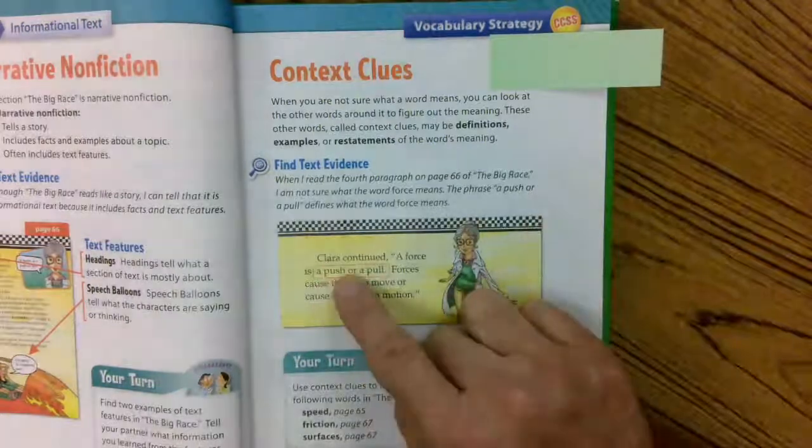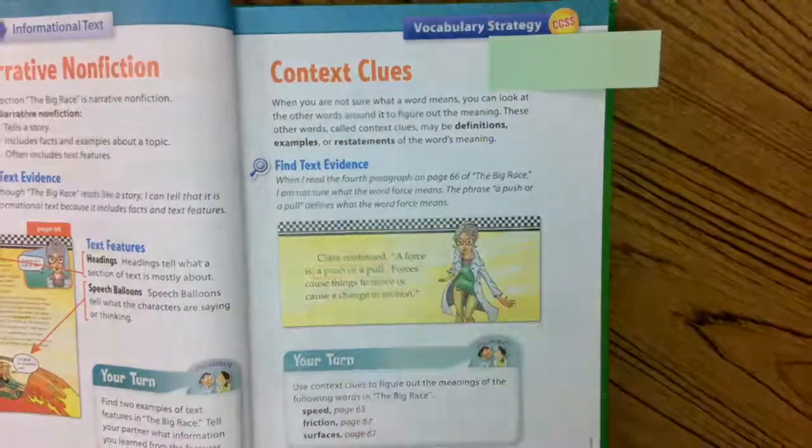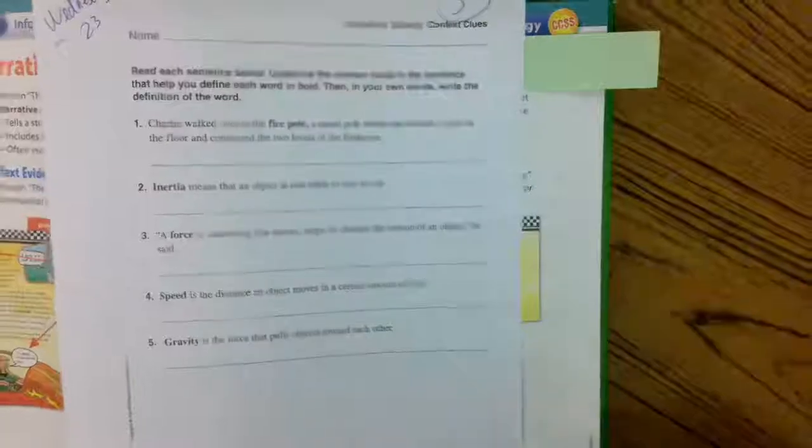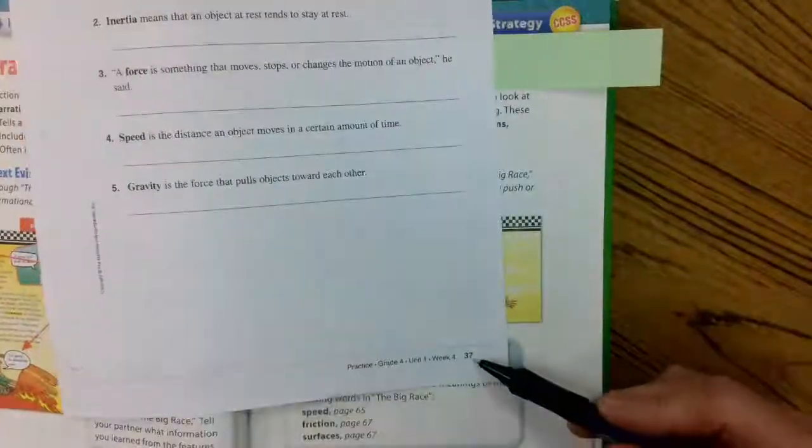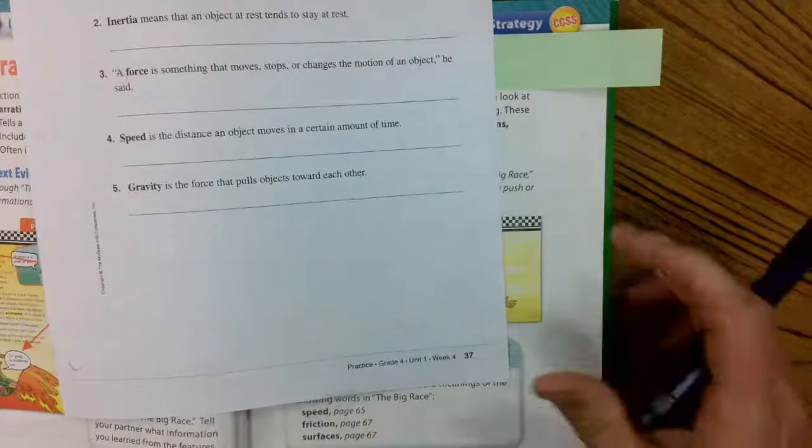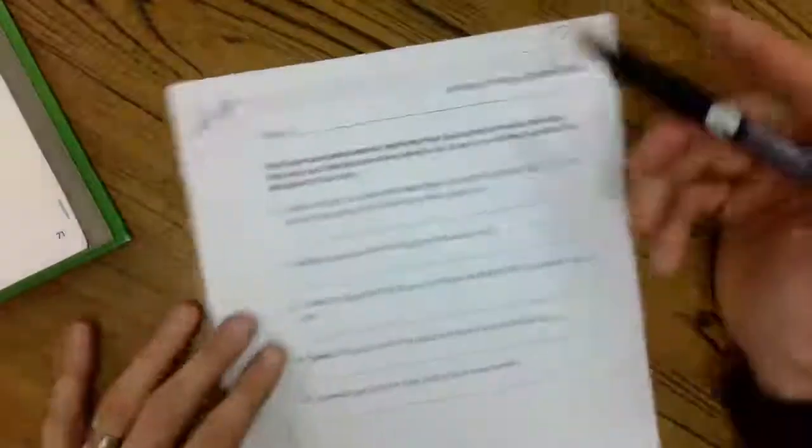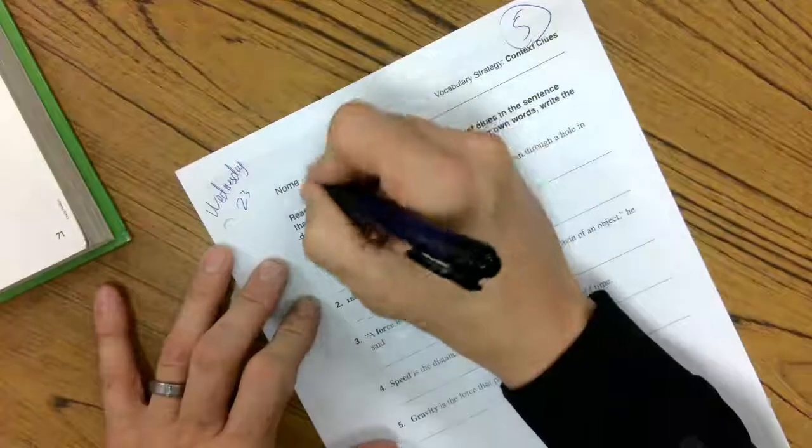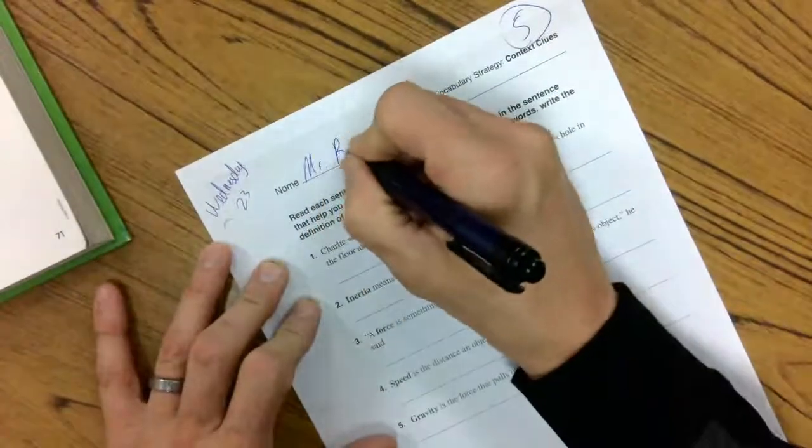So not only did it give its definition, but afterwards, it gave us some examples. In your packet today, you should have worksheet page 37. It's worksheet number 5 for the day when you're putting them back in order in the Wednesday folder with your complete name on it.